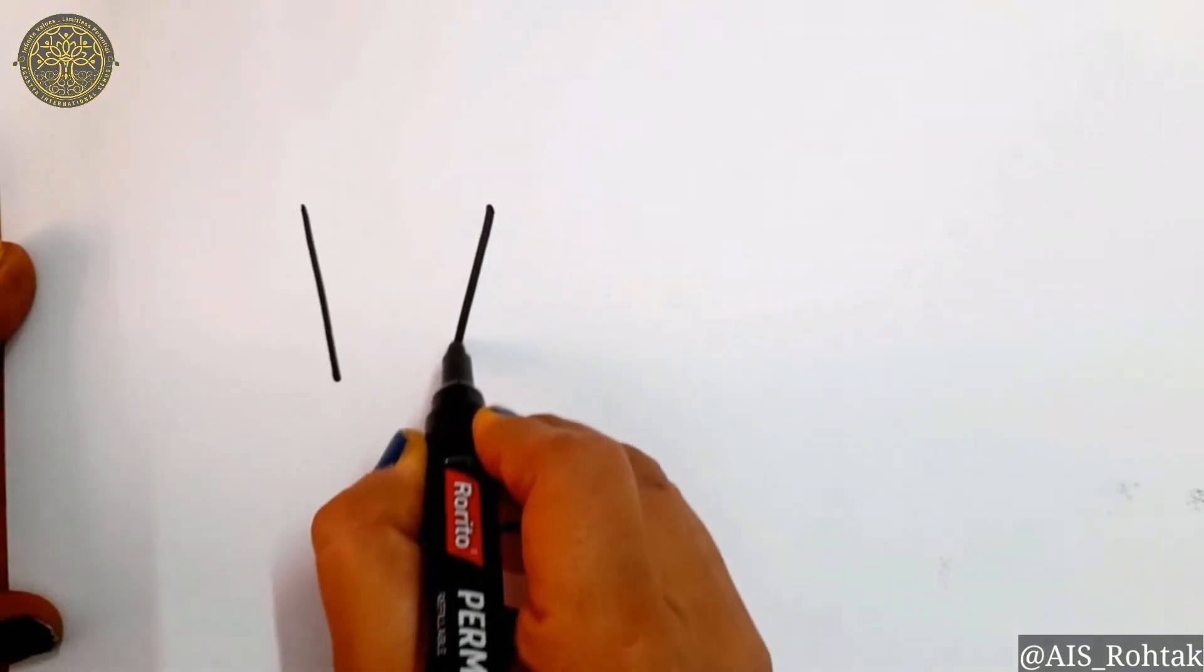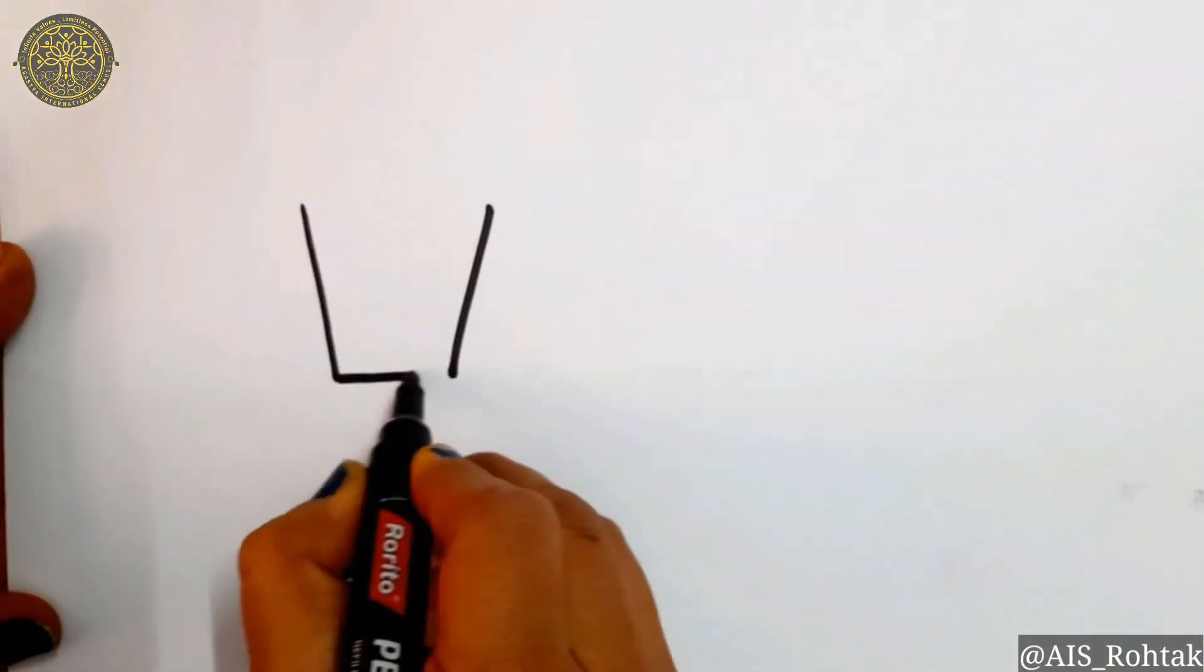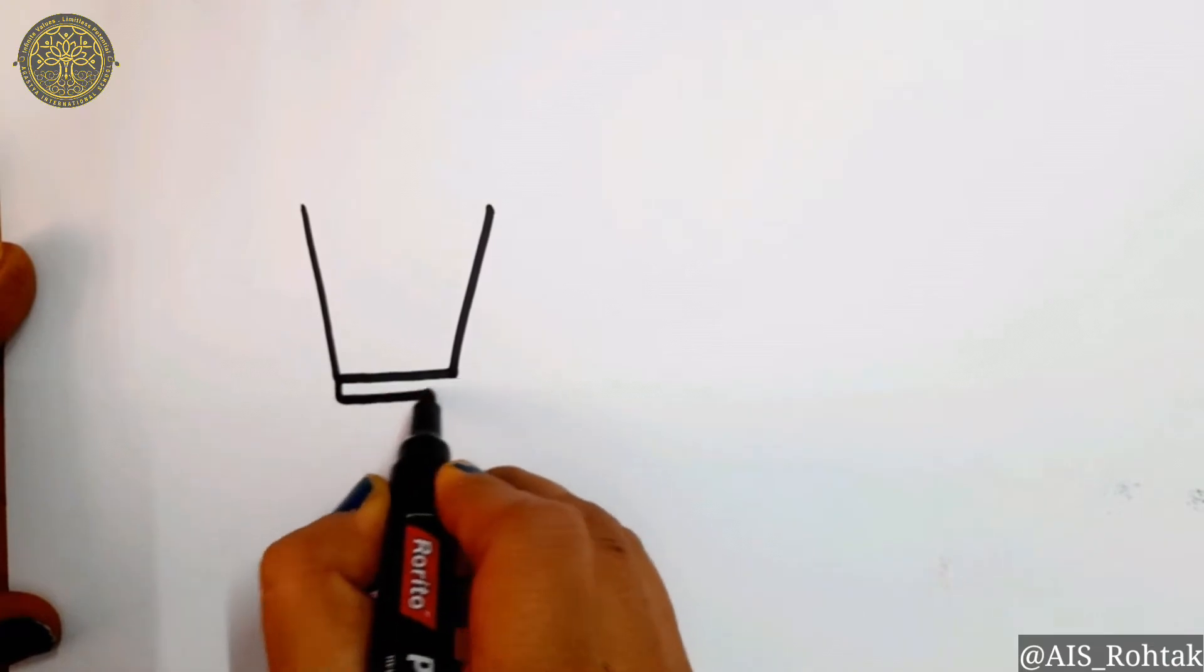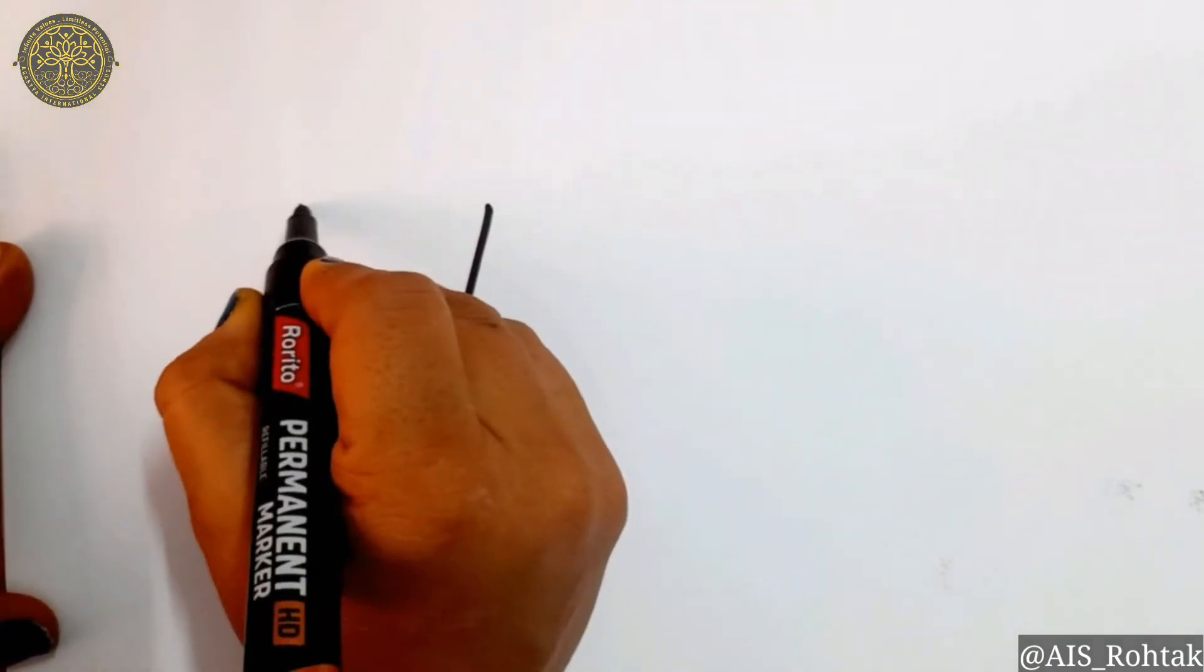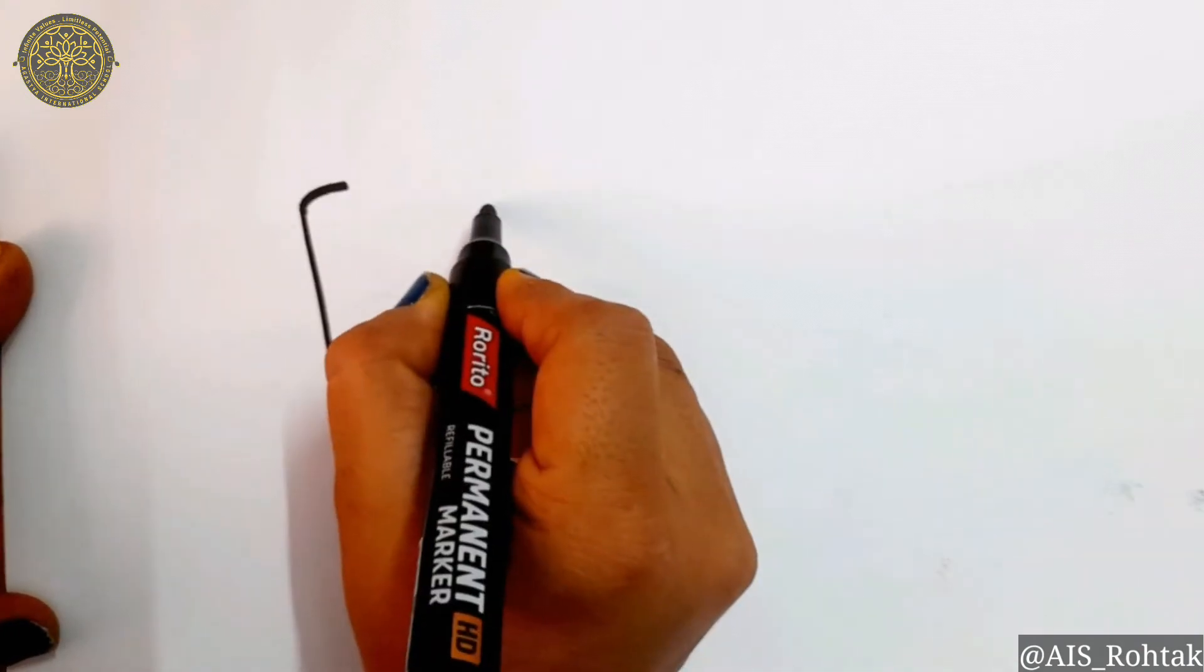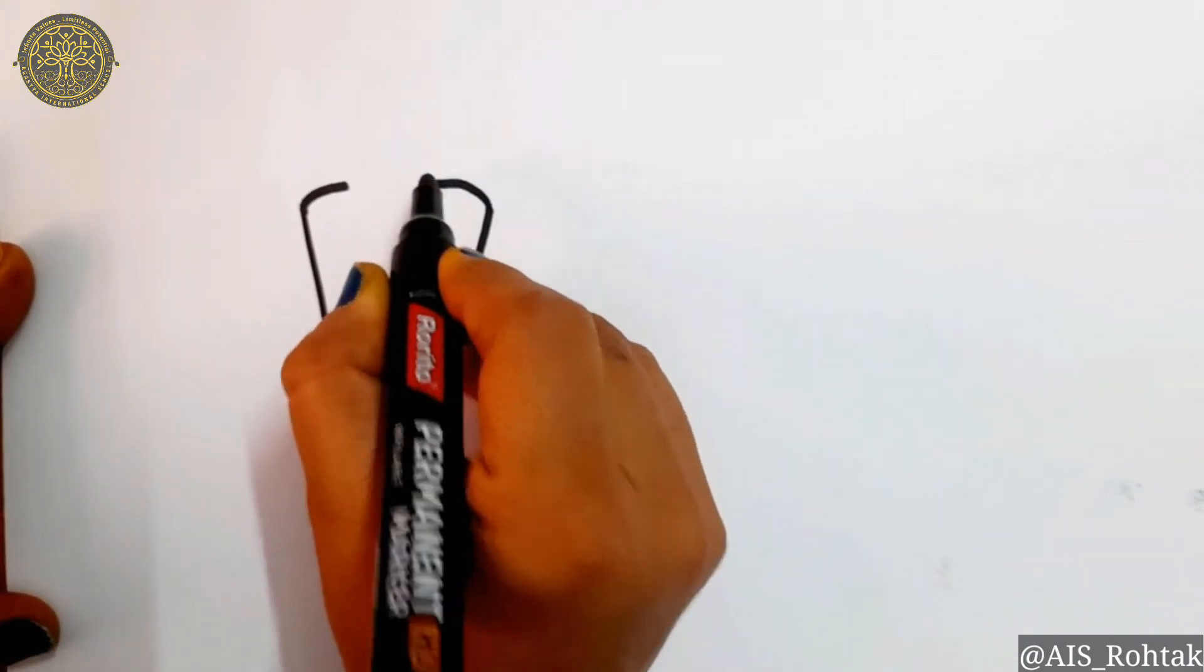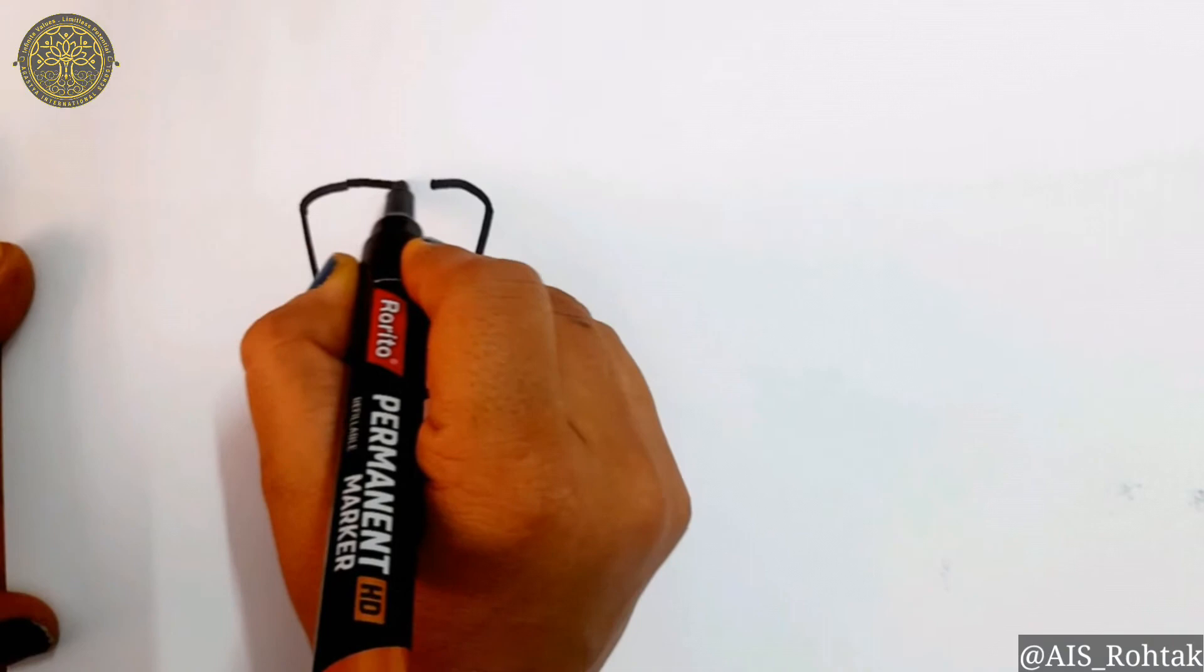To draw winter clothes, first of all just draw two slant lines like this. Then one sleeping line, one more sleeping line and some standing lines in between. Then draw two sleeping lines like this and join it from center like this.